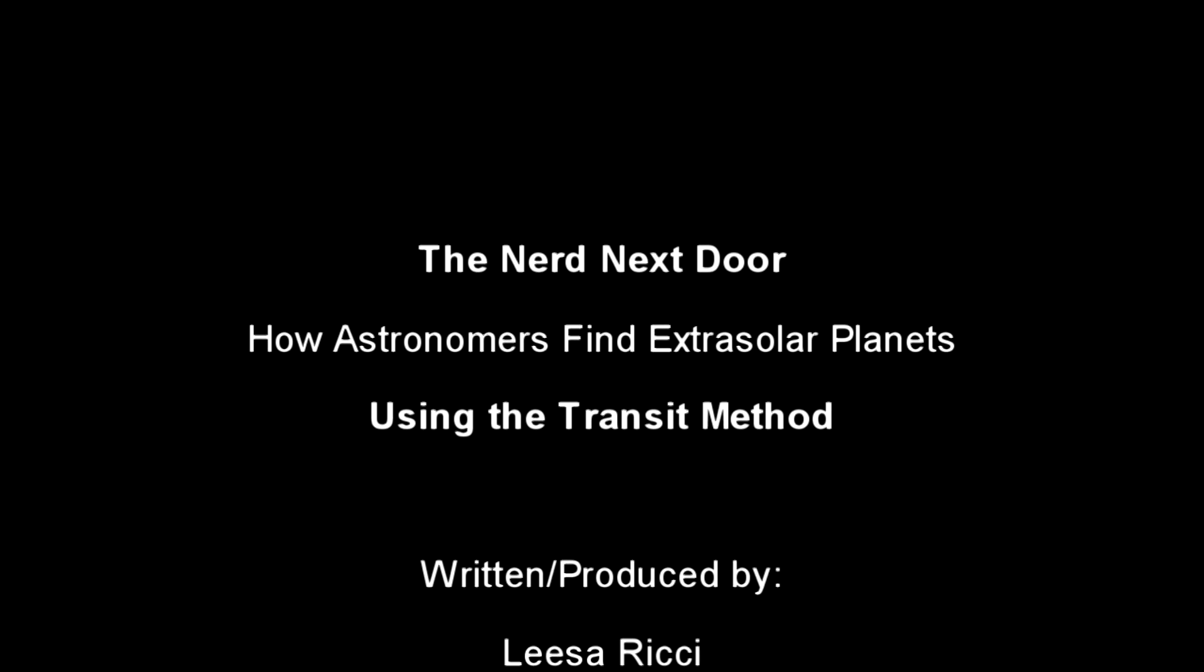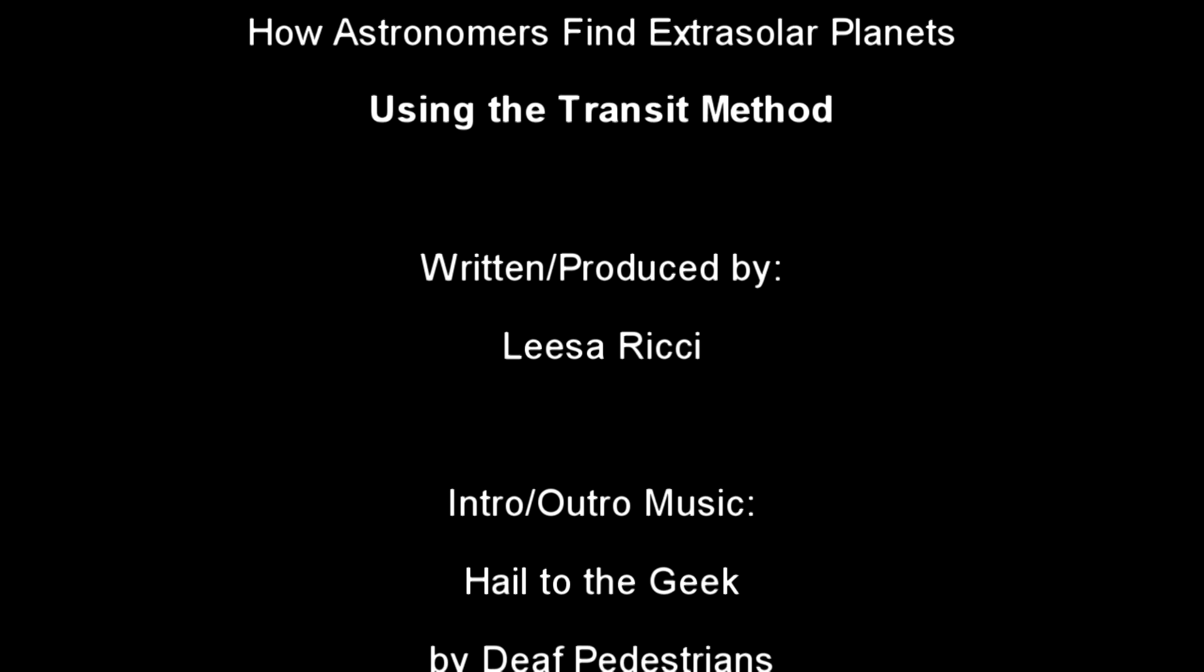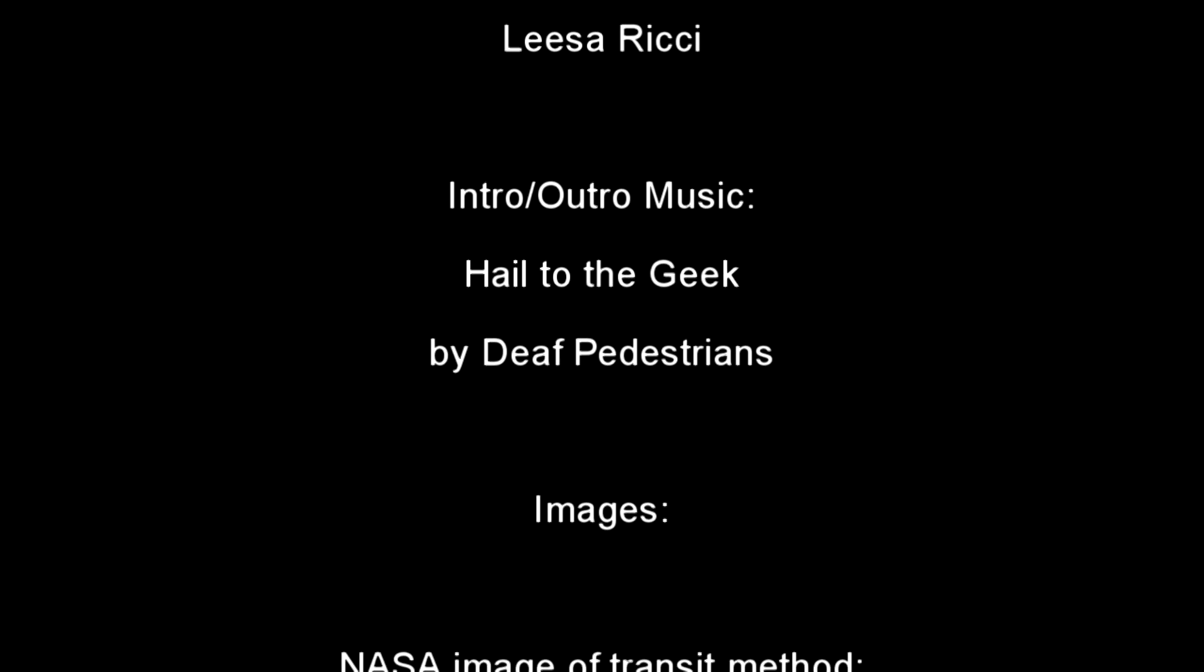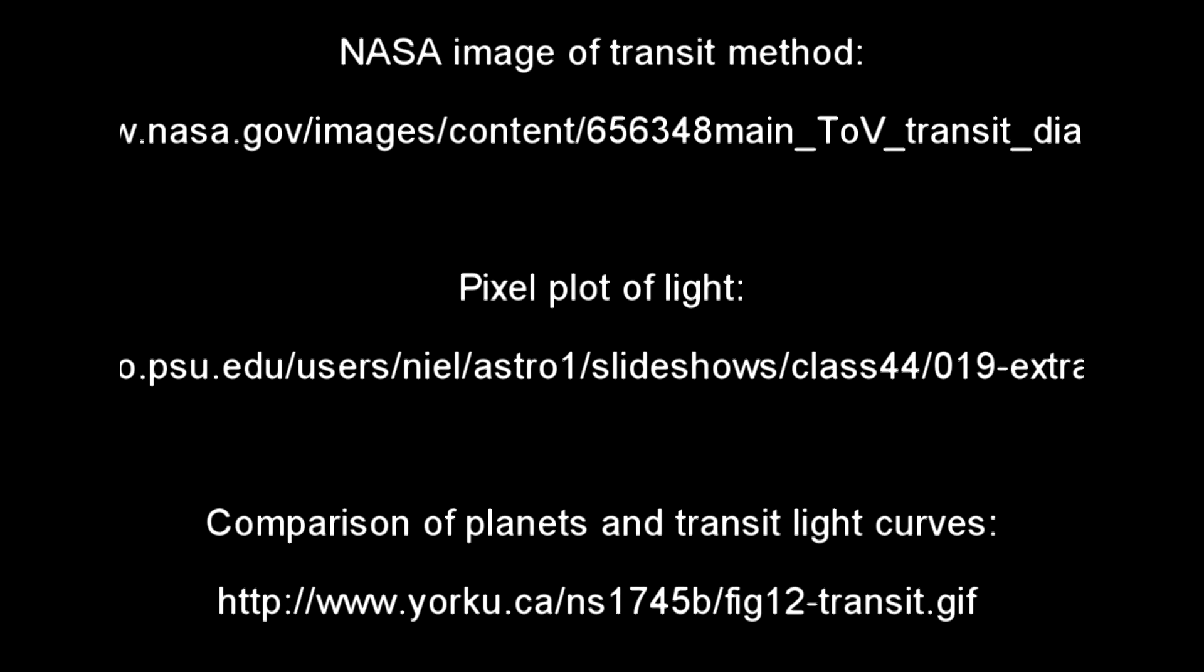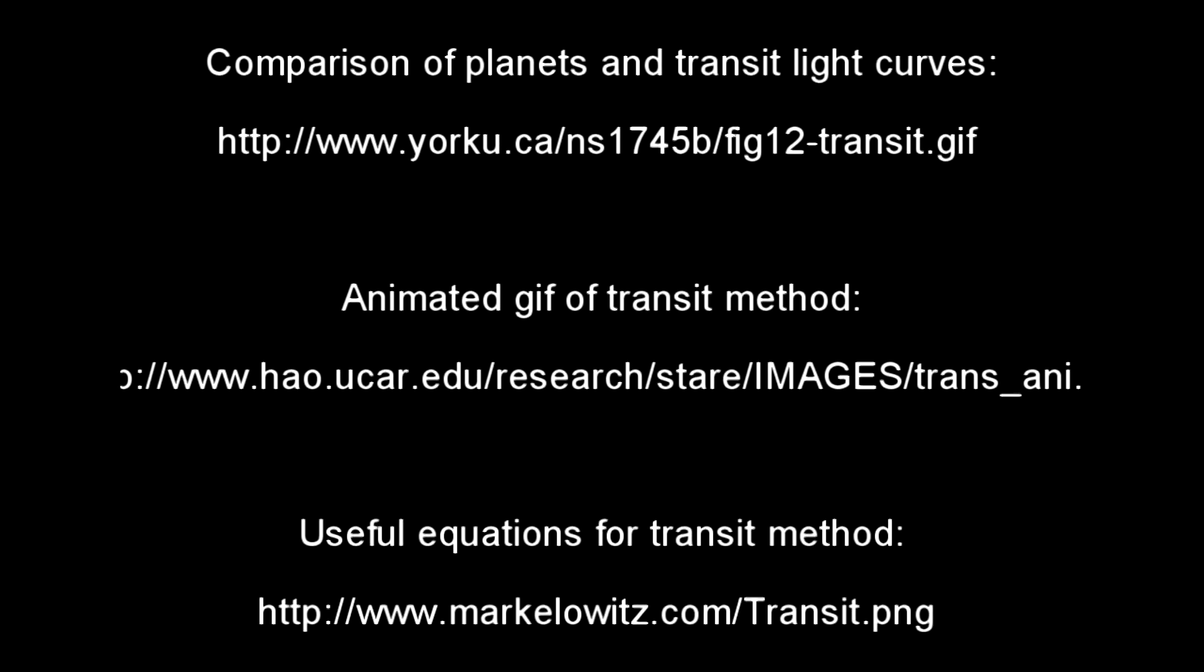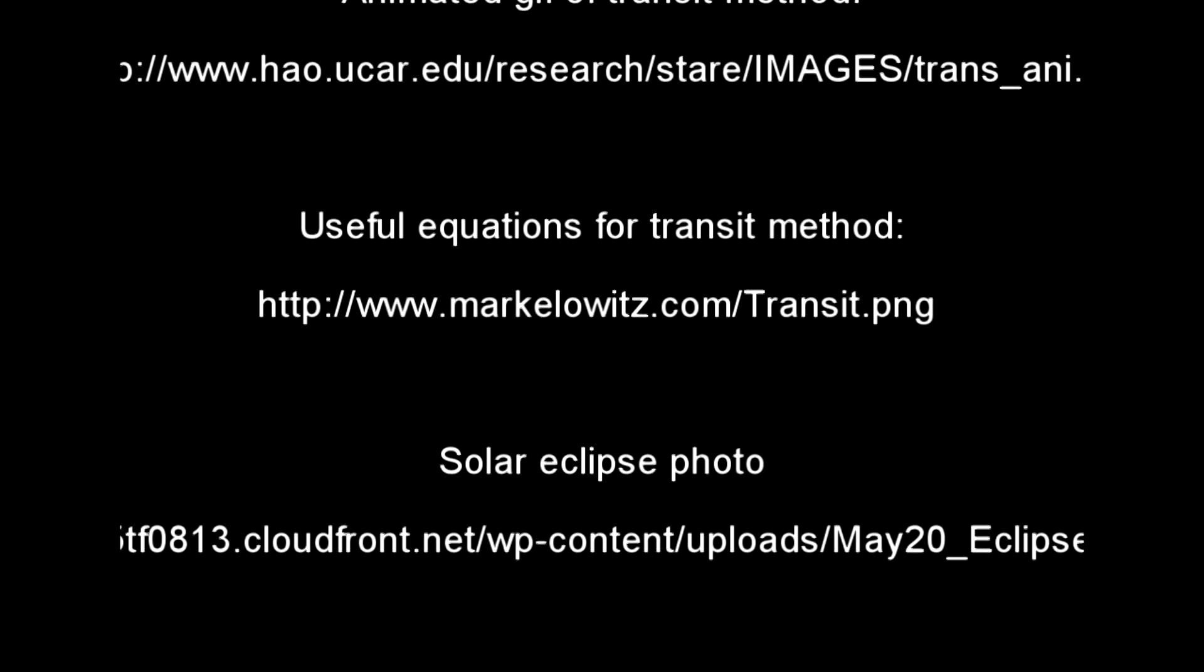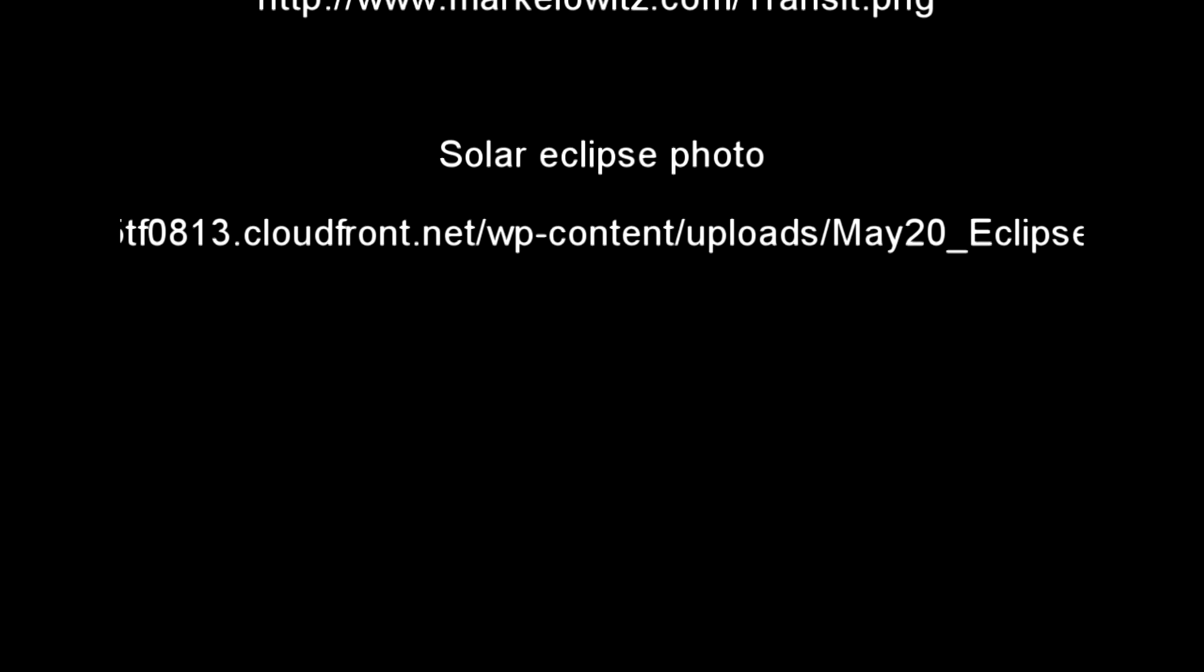So that is the transit method, and that's another common way that astronomers look for extrasolar planets. It's good to be a geek, it's good to be a creep, it's good to draw my pictures that no one will ever see. It's good to be a geek, it's good to be a gnome, it's good I'll never wait and run beside the telephone.